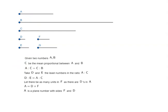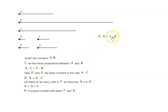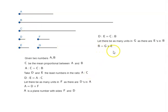Now the same thing we have to do with respect to B. We have D is to E is equal to A is to C, which in turn is equal to C is to B. So we can say D is to E is equal to C is to B. Let there be as many units in G as there are E's in B, which means B is equal to G times E. So B is a plane number with sides G and E.